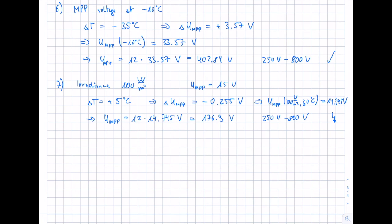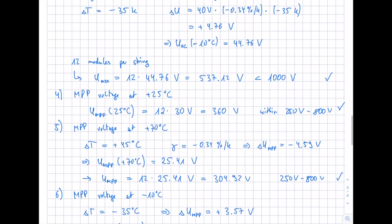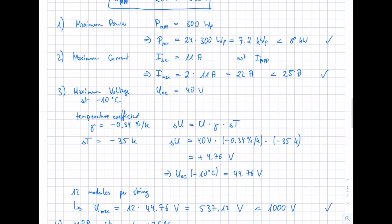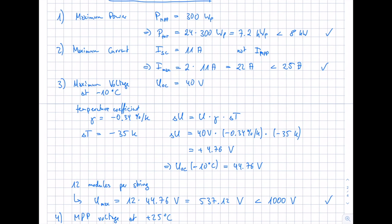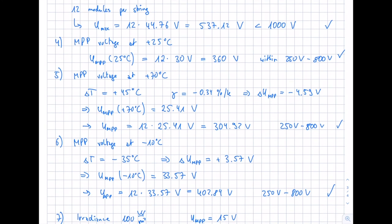Criterion seven not being met is not a critical problem as long as criteria one through six are all fulfilled. The most important criteria are one, two, and three — maximum power, maximum current, and maximum voltage — because failing these could damage your inverter. Criteria four through six ensure the inverter operates within the MPP range under normal conditions, giving you maximum yield from your PV system.